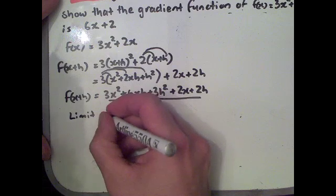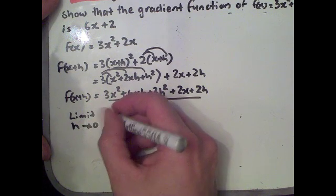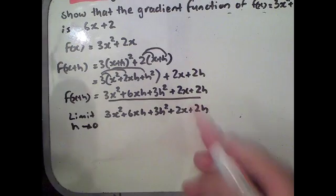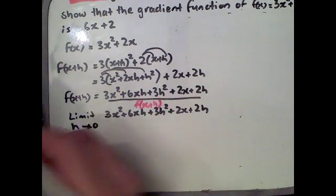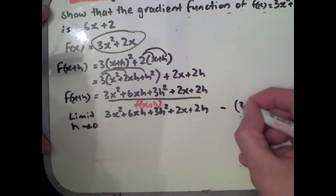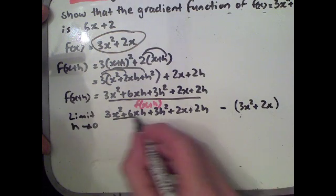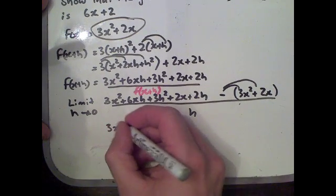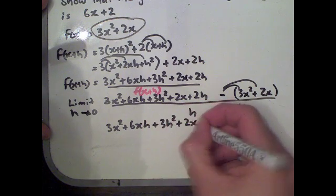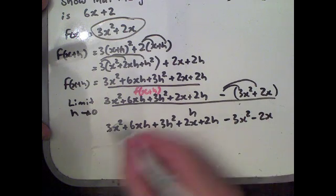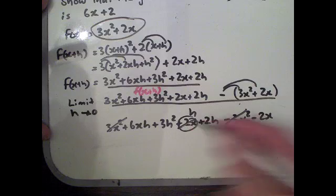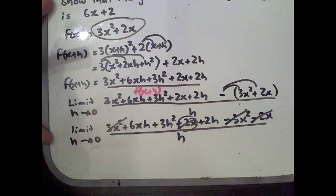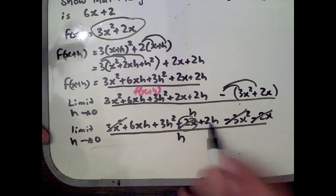Using our rule, we find the limit as h tends towards 0. We replace f of x plus h with 3x squared plus 6xh plus 3h squared plus 2x plus 2h, then subtract f of x — that is 3x squared plus 2x — making sure to keep it in brackets. Simplifying the numerator: the 3x squared terms cancel, the 2x terms cancel, leaving 6xh plus 3h squared plus 2h over h as h tends towards 0.